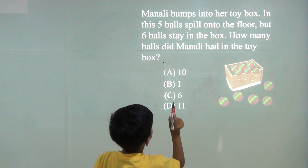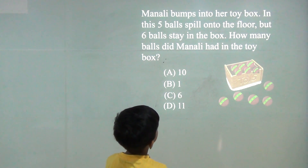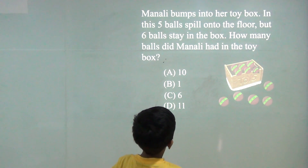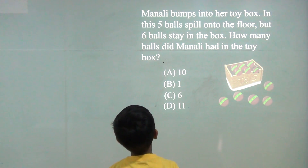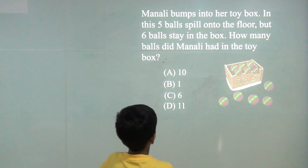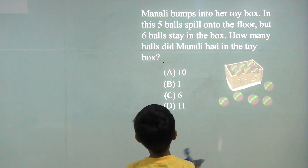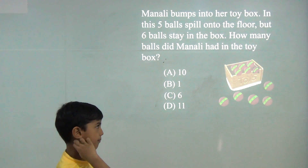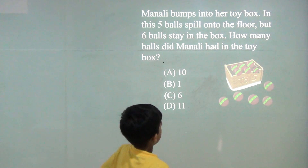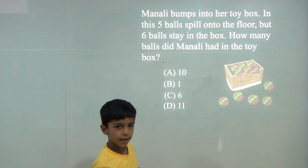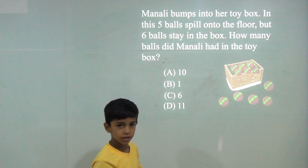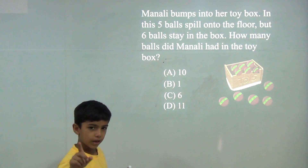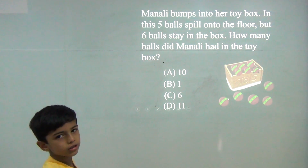Manali bumps into her toy box. 5 balls spill onto the floor, but 6 balls stay in the box. How many balls did Manali have in the toy box? So we will do 5 plus 6. We know 5 plus 5 is 10, so 1 is extra. So 10 plus 1 is 11. So the answer would be 11.